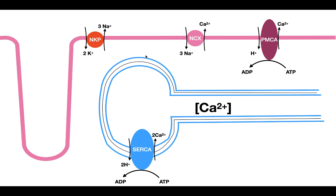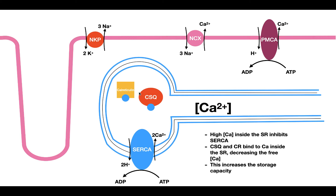However, SERCA is inhibited by a high calcium concentration inside the sarcoplasmic reticulum. The cell gets around this through two calcium-binding proteins: calreticulin and calsequestrin. Both proteins bind to calcium and decrease the free concentration of calcium inside the sarcoplasmic reticulum. By decreasing the level of free calcium, they increase the storage capacity of the SR by preventing calcium from inhibiting the SERCA pump, allowing SERCA to bring more calcium into the sarcoplasmic reticulum.